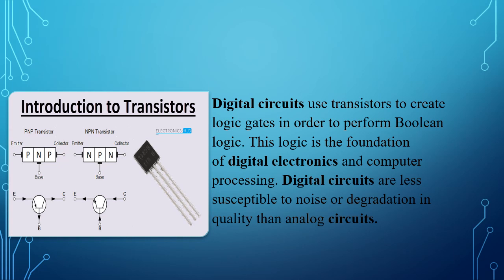Digital circuits use transistors to create logic gates in order to perform Boolean logic. Boolean refers to two values: 0 or 1. This logic is the foundation of digital electronics and computer processing. Digital circuits are also less susceptible to noise or degradation in quality than analog circuits.